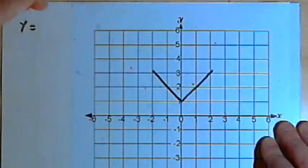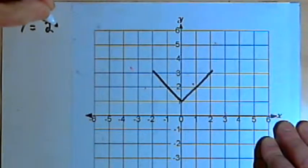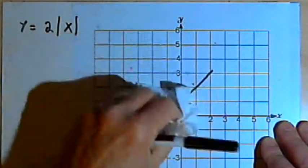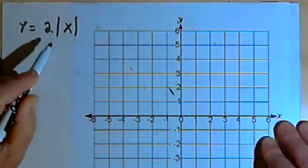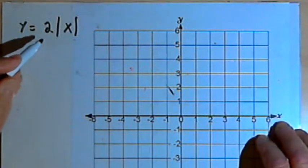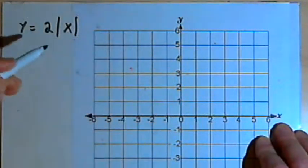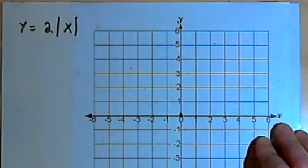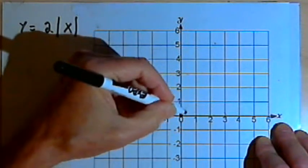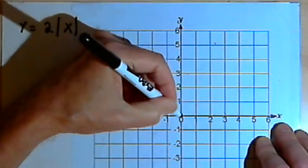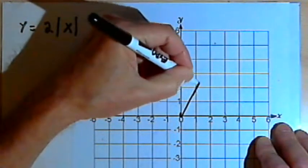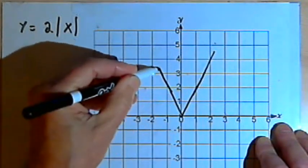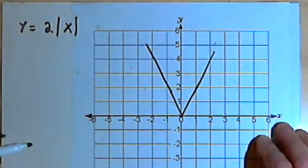Another variation might be that I'm multiplying that absolute value by some number. Let's try 2 times the absolute value of x. This tells us the graph is going to be stretched vertically. It's going to be twice as steep as it originally was. It's going to have the point of the V at the origin, but now instead of going up 1 and over 1, it's going to go up 2 and over 1. In other words, we're stretching it upwards. Once we've drawn one side of the graph, we can just draw its mirror image across the y-axis.